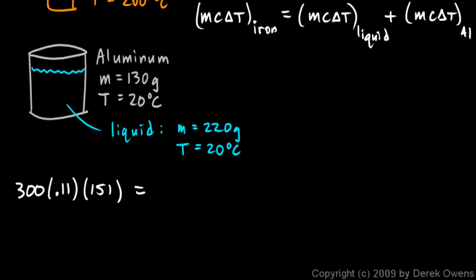That's going to equal the MC delta T for the liquid, the heat gained by the liquid. So the mass of the liquid, we were told, is 220. The specific heat of the liquid, we don't know, and that is what we're looking for. And the change in temperature of the liquid, we do know. It started at 20 degrees Celsius and warmed up to 49. So the delta T for the liquid is 29.